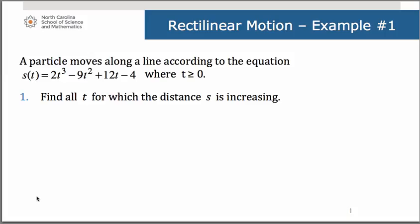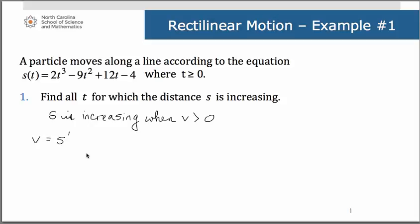The first thing we want to determine is the time values for which the distance of this particle is increasing. Remember the rules: the distance s is going to be increasing when velocity is greater than zero. So the velocity we obtain by taking the derivative of the position function — establishing this relationship is very important. That gives us 6t squared minus 18t plus 12, and we want to see where that is greater than zero.